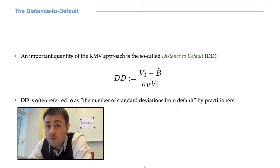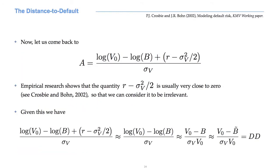As a curiosity, practitioners often refer to the distance to default as the number of standard deviations from default. Empirical research shows that the quantity R minus sigma V to the power 2 over 2 is usually very close to zero, so that we can consider it to be irrelevant in our computations. But this means that A is approximately equal to the difference of the logarithm of V0 and the logarithm of B over sigma V.